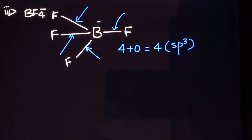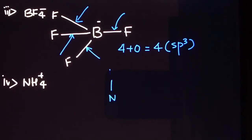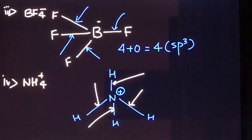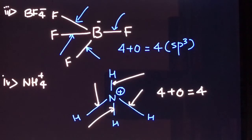BF₃ is generally not very stable because its octet is not complete, but it reacts with F⁻ to form BF₄⁻, which is stable. So the hybridization changes from BF₃, which is sp2, to BF₄⁻, which is sp3. The next one is the ammonium ion. Both BF₄⁻ and ammonium ion are isostructural — the structure is tetrahedral for both. Nitrogen forms four sigma bonds with zero lone pair on the central atom, so the steric number is four and the hybridization is sp3.